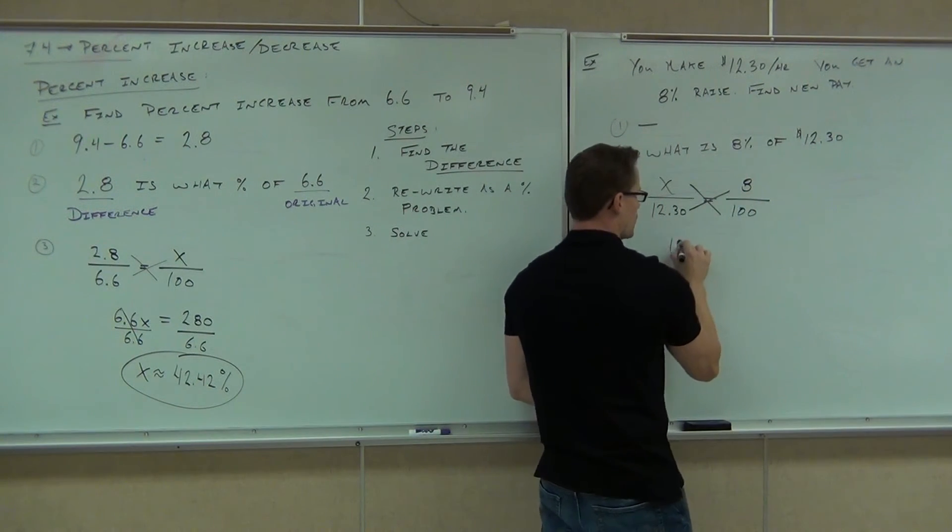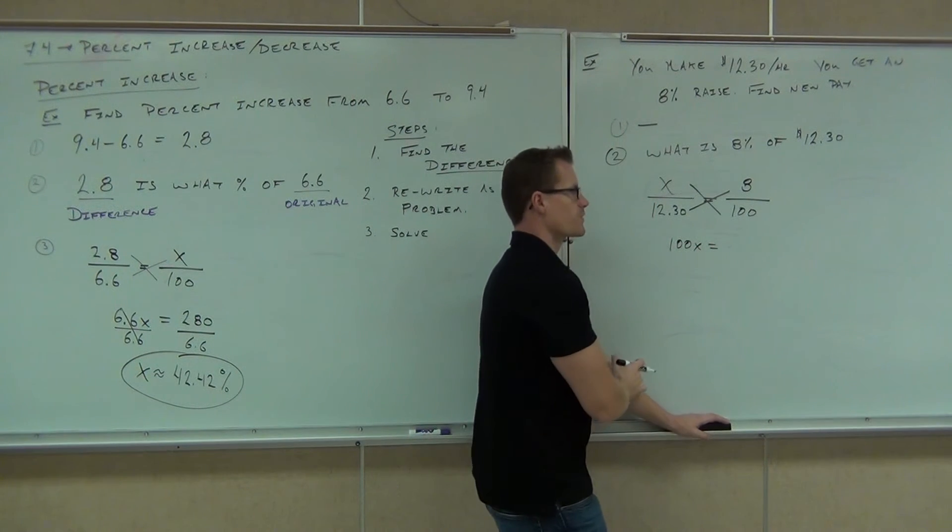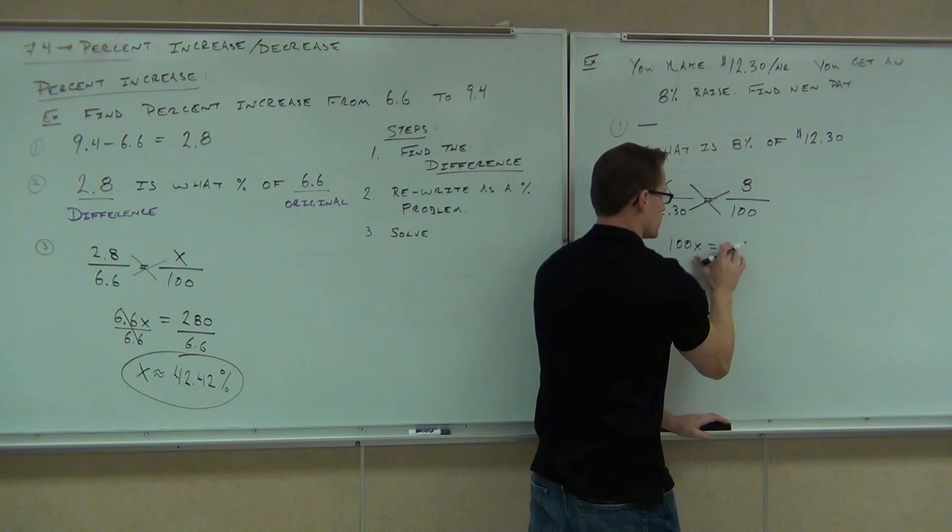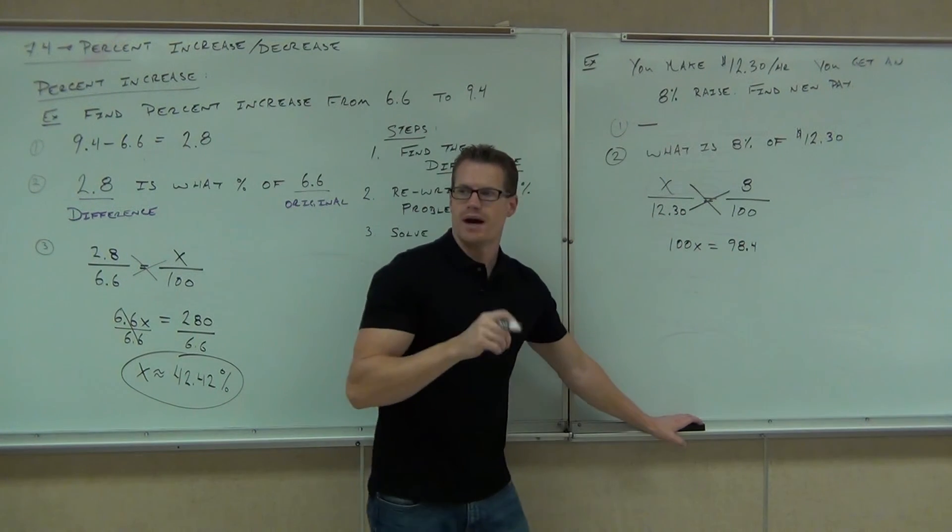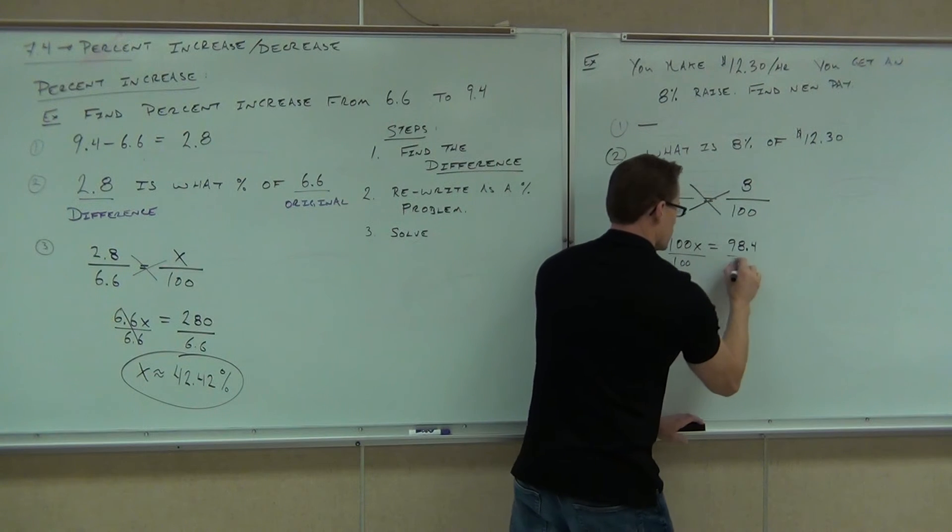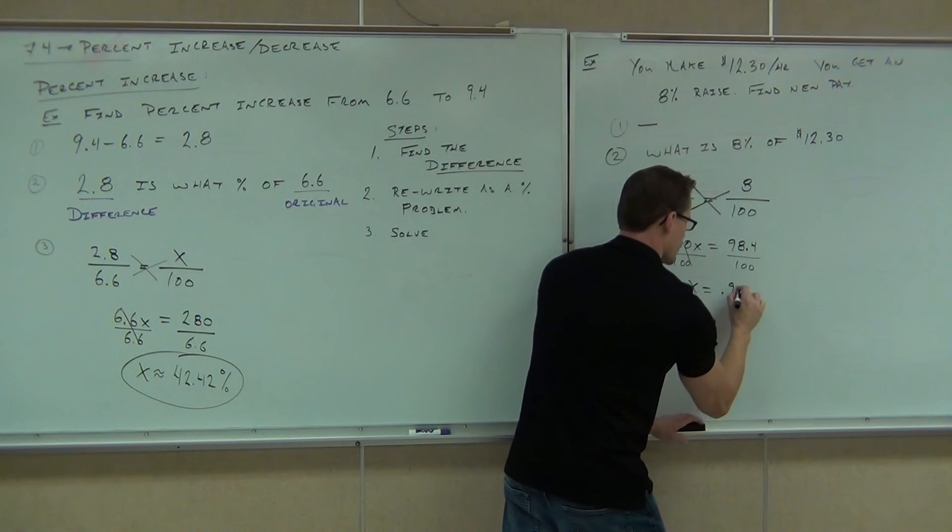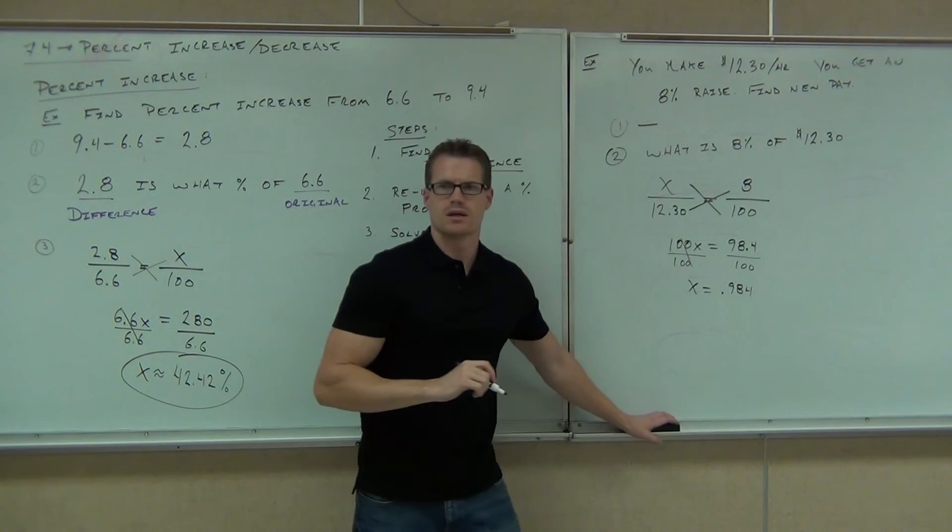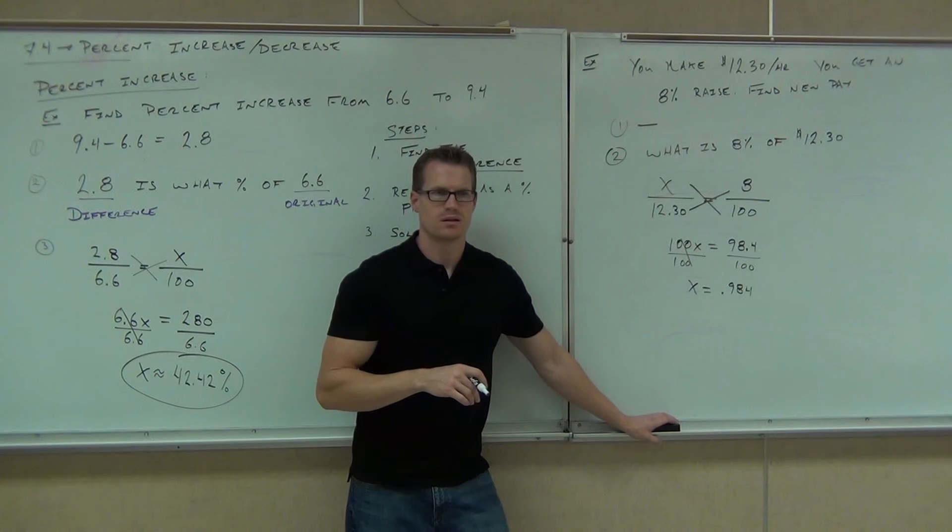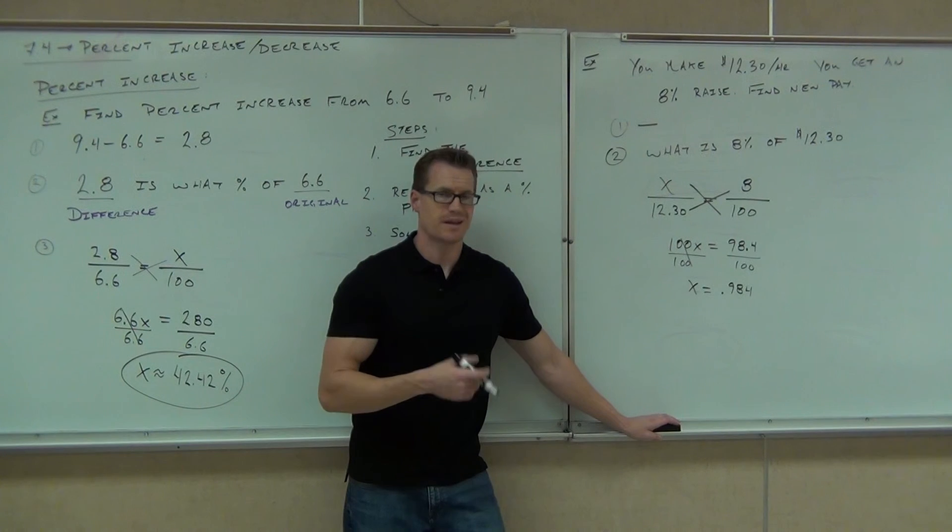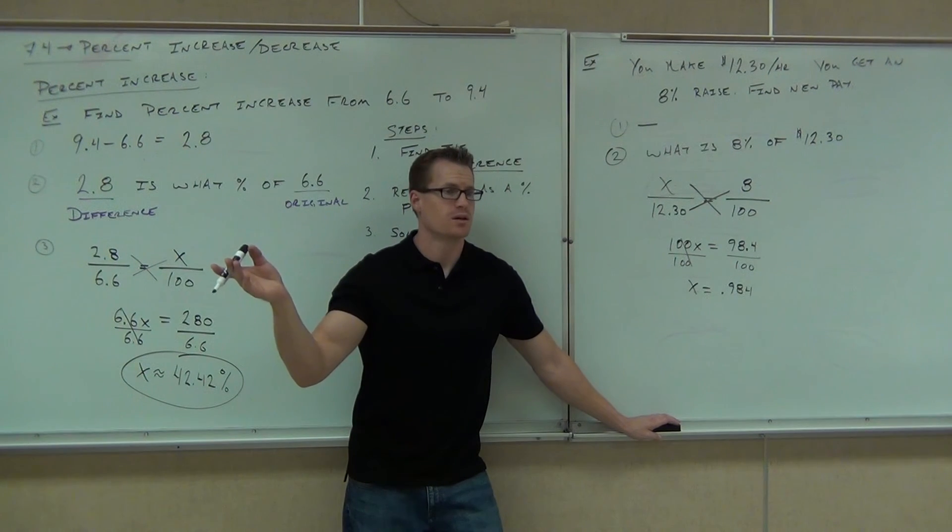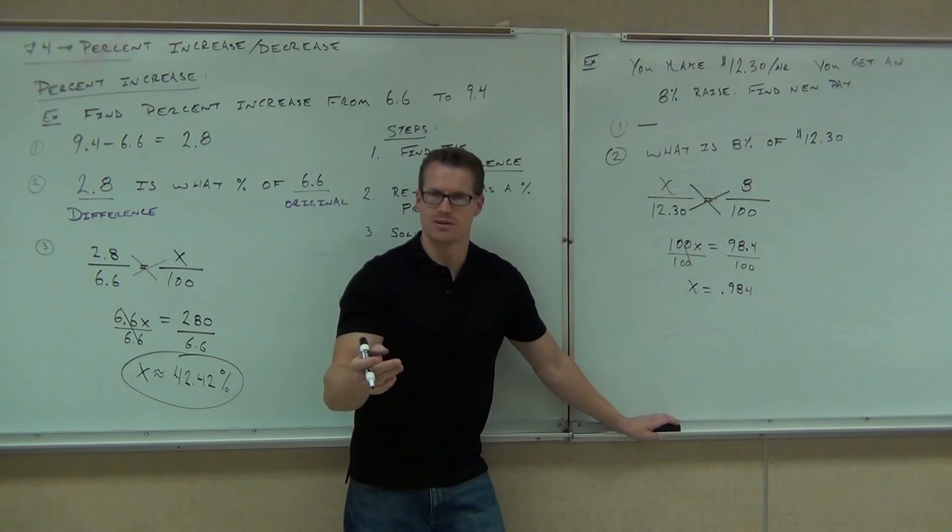If we cross multiply, we'll get 100X equals 8 times 12.30. Can someone tell me what that is? 98.4. And if you divide that by 100, you're going to get X equals 0.984. Look at the board here with me. 0.984, what is that? Are we looking for a percent? We're looking for dollars. That's dollars. How much is 0.9? 98 cents. It's 98.4 cents. You're getting 98 cents more per hour. Does that make sense to you?